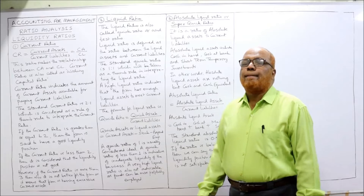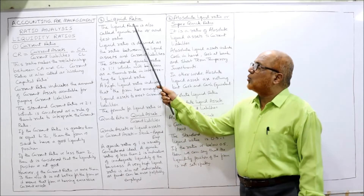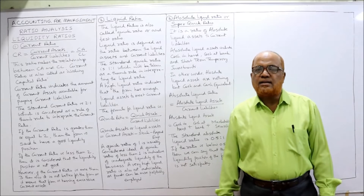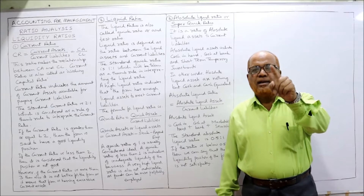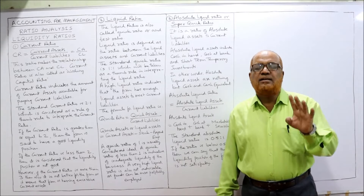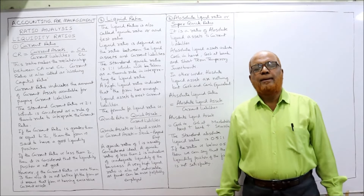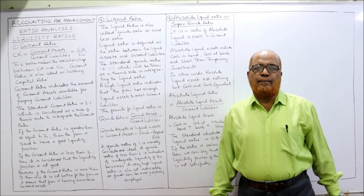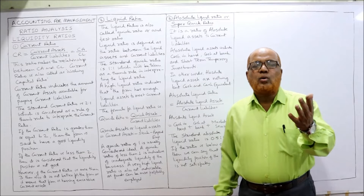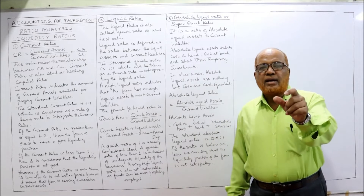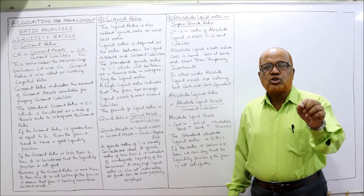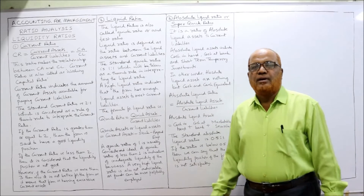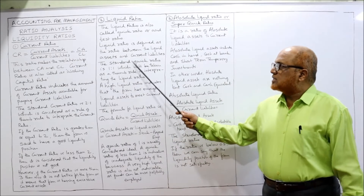The second liquidity ratio is the liquid ratio, also called quick ratio or acid test ratio — all three names mean the same. This ratio explains the relationship between liquid assets and current liabilities. The formula is quick assets divided by current liabilities.